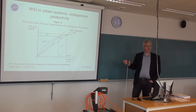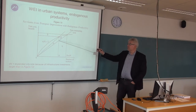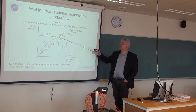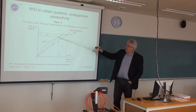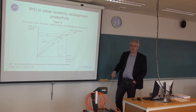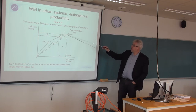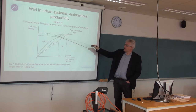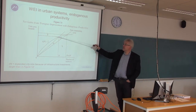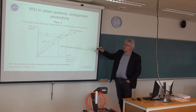I could have introduced congestion here as well, and then the shapes would be a bit different, but for illustration purposes it's okay to show it without congestion. We improve the transport system, reduce the transport costs, and then we get an equilibrium where the productivity measured in terms of wages has increased, and the number of workers within a reasonable commuting distance has also increased.